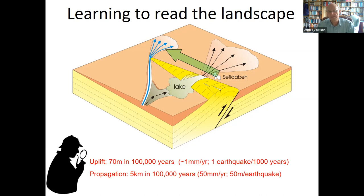All the clues to what's going on are in the landscape if you can read them. Now we can do it — it's obvious what's going on. Before the earthquake, no one had done this work, but we've now seen this in lots of places and can go around and identify places which are in principle vulnerable because the landscape tells you what has happened before.